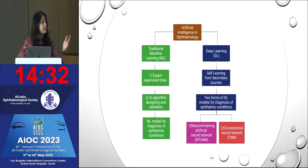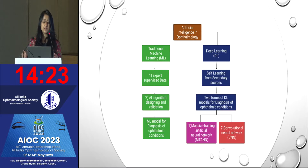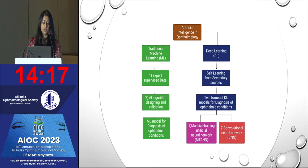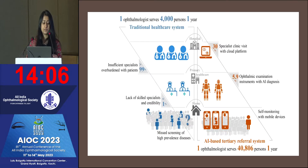As everybody has already quoted, artificial intelligence in ophthalmology could be either traditional machine learning or deep learning. When we talk about deep learning, it is basically self-learning from secondary sources, which could be either in the massive training artificial network form or the convolutional neural network form. Traditional machine learning can be used as a model for diagnosis of ophthalmic conditions.